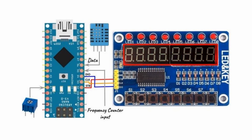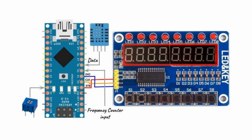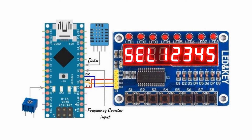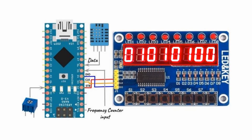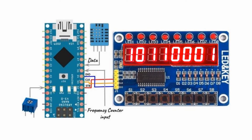Pressing S4 will give us the scrolling text, and we can increase or decrease the speed of the scroll by changing the pot value. Pressing S8 to exit the function and go back to the main menu. Pressing S5 will give us the 8-bit binary count, and we can control the speed of the count by the potentiometer. Pressing S8 will exit the count and take us back to the main menu.